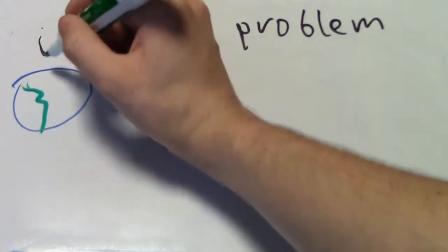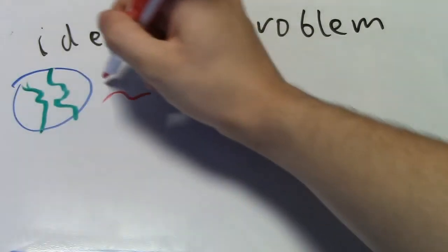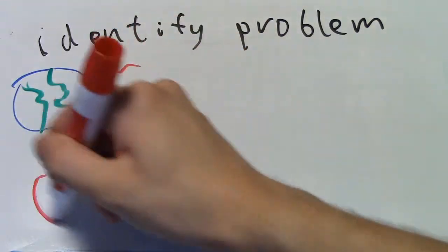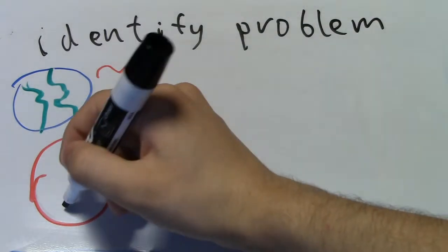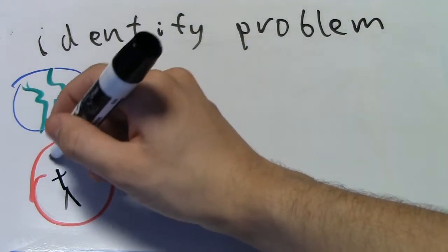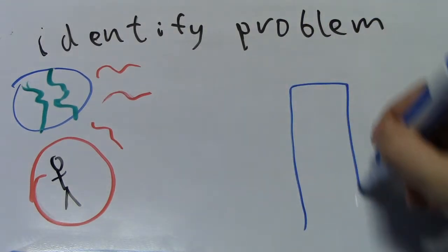Now, the first step of this process is to identify a problem. This problem can really be anything. It doesn't have to necessarily be anything huge, like how to solve global energy increase, or how to get a man on Mars. It can be really anything that you think humans have as a problem.